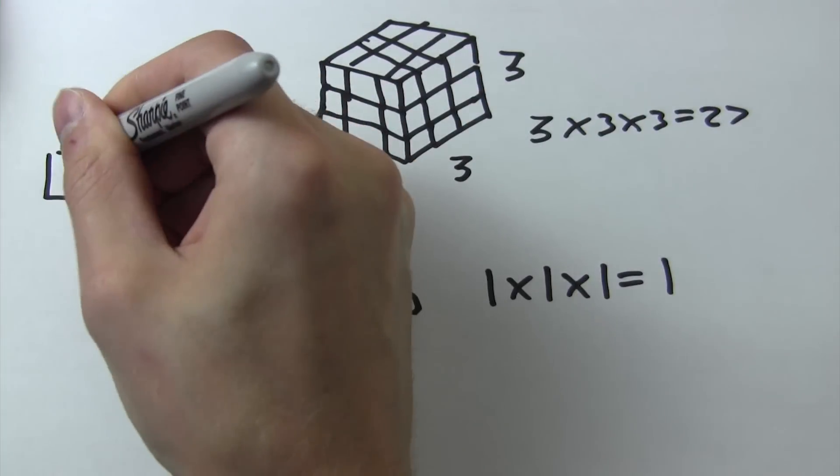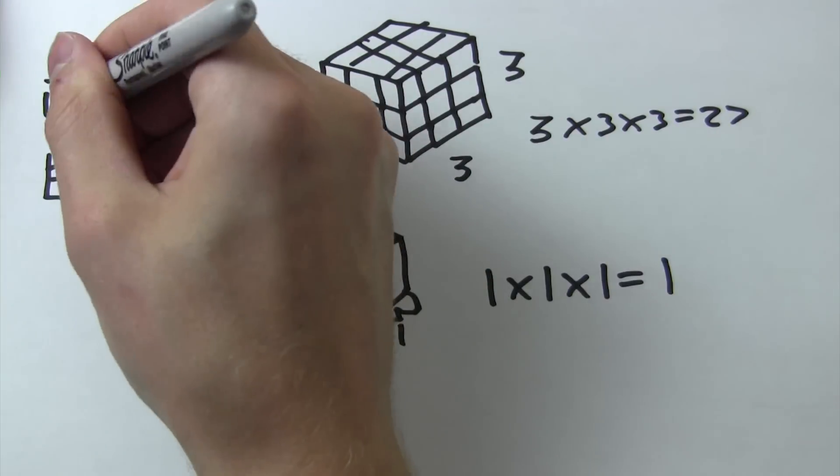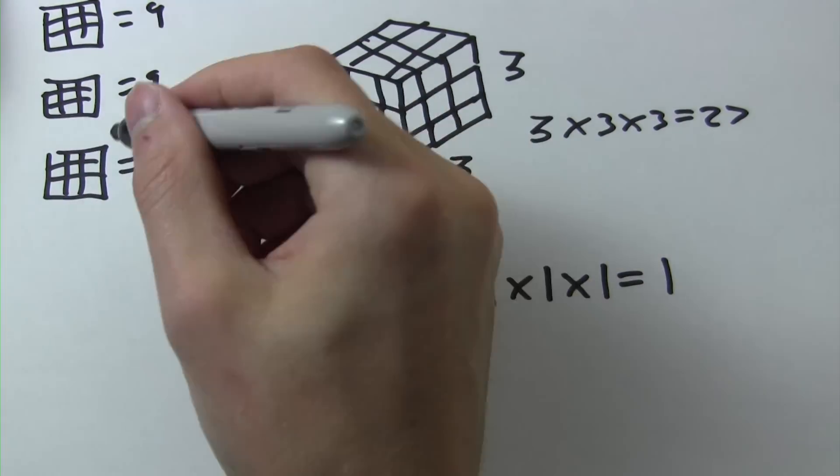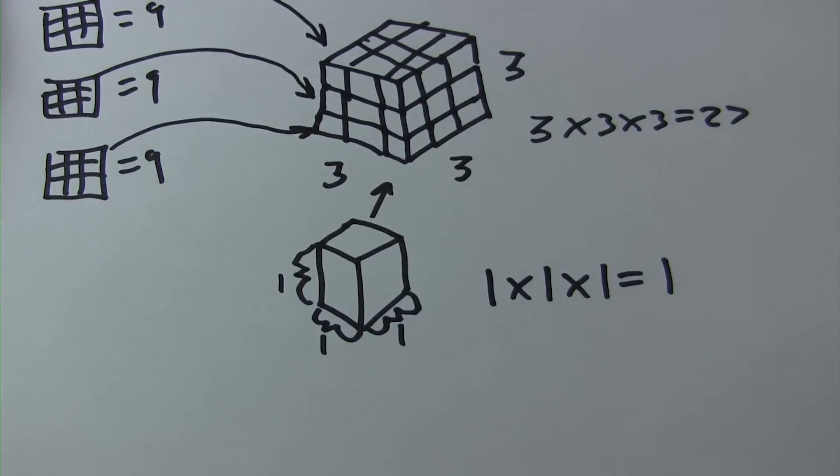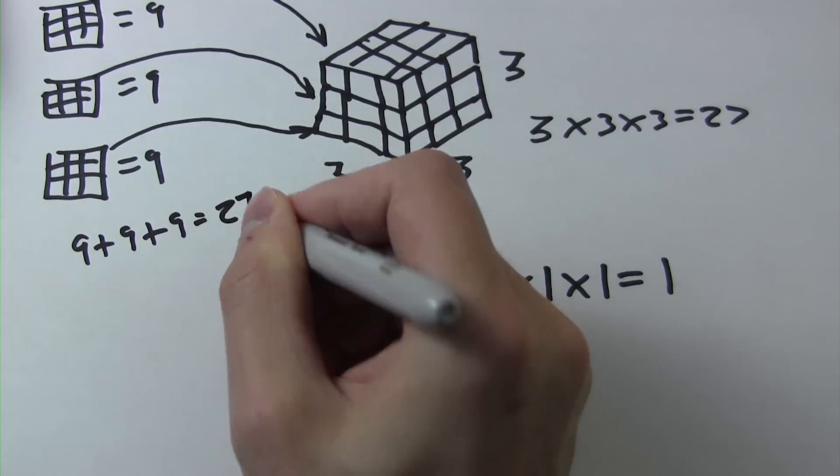If we break this out, we can see that we have three rows of nine cubes each. Nine plus nine plus nine is also equal to 27 cubic inches.